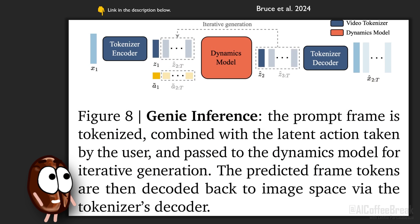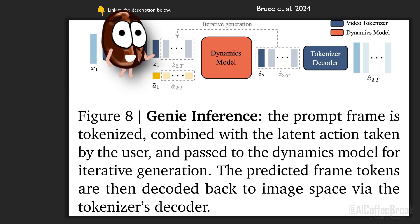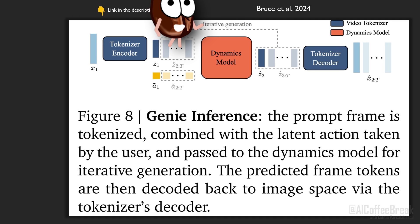At inference, a user gives the model an image to serve as an initial frame. The video encoder of the video tokenizer tokenizes it. The player then tries to move in the environment, pressing one control which maps to a discrete latent action. The dynamics model takes the video tokens, the action, and predicts the next frame tokens.